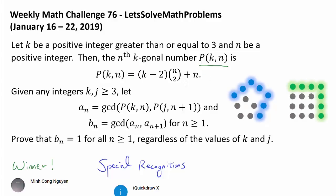In case you have never encountered the polygonal numbers during your mathematical career, let me quickly give you an overview. k denotes the number of sides our polygon is going to have. So when k is 5, we have pentagonal numbers; when k is 4, square numbers; when k is 3, triangular numbers; when k is 6, hexagonal numbers, etc.